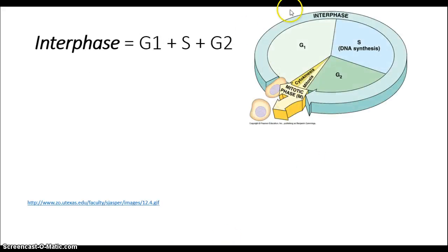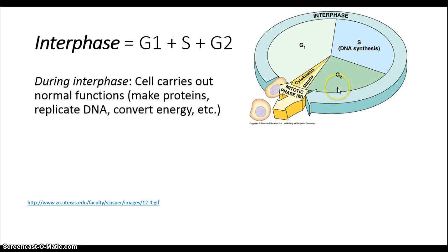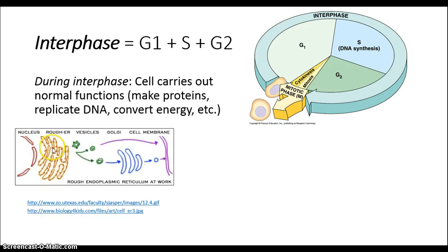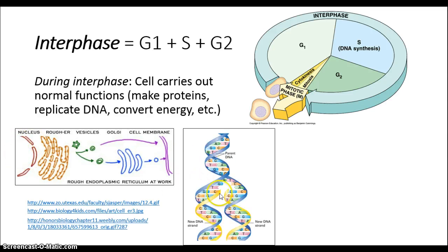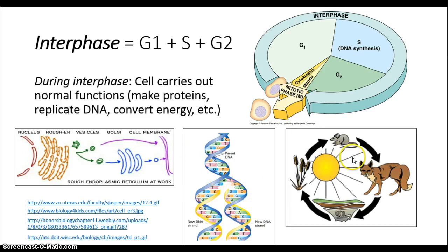Interphase, as we see in our previous diagram, is where the cell spends most of its lifespan — the G1, S, and G2 phases. Here the cell carries out a number of normal functions, for example making proteins using coded instructions from the nucleus, copying its DNA as needed to make two identical copies from one original one, and converting energy from its environment into new forms for its own use.